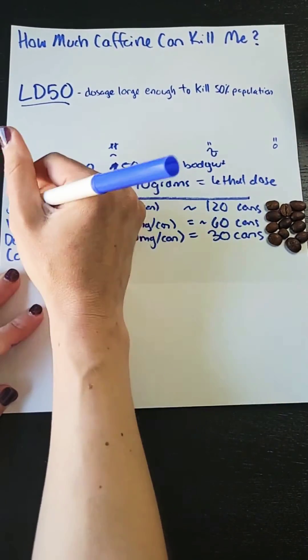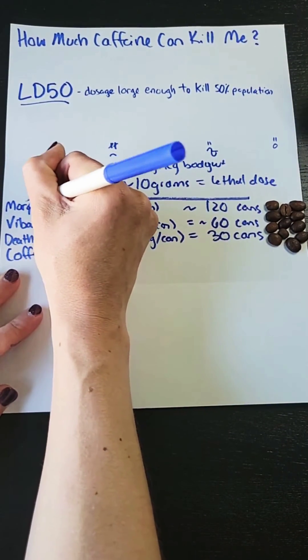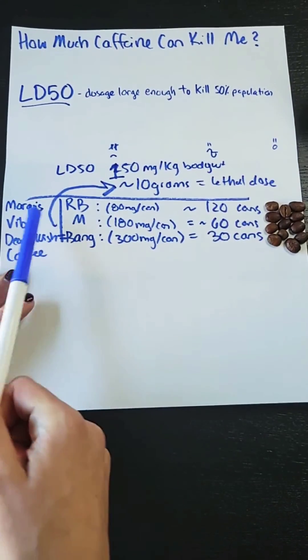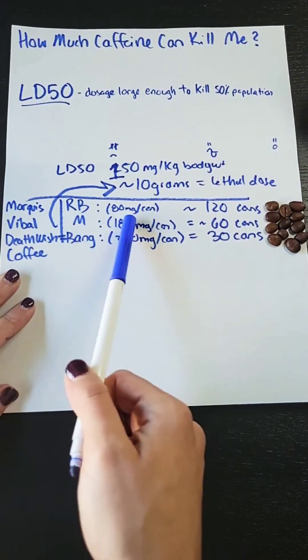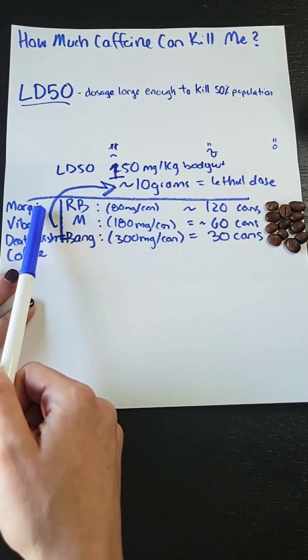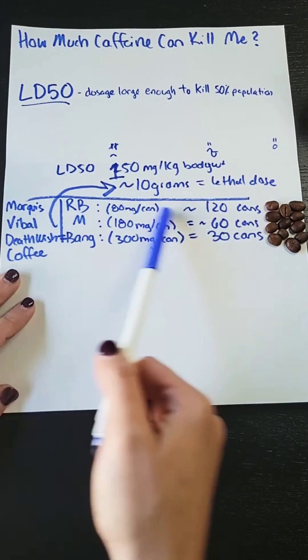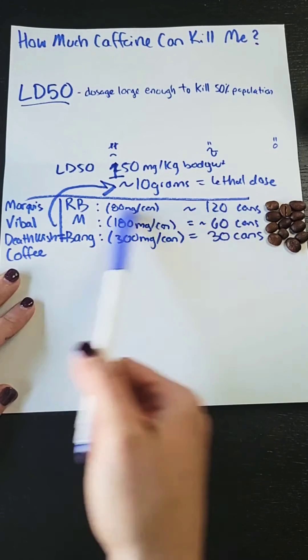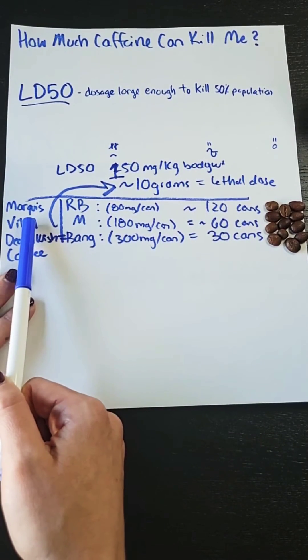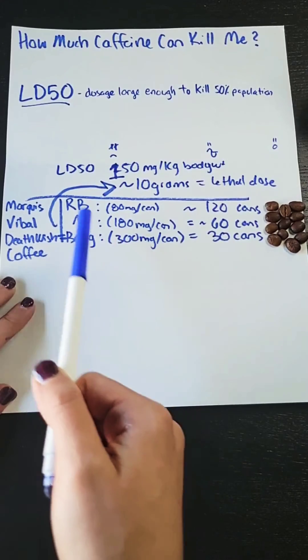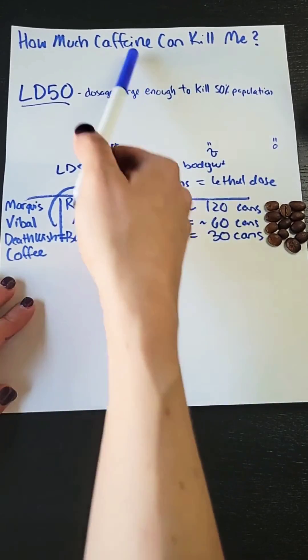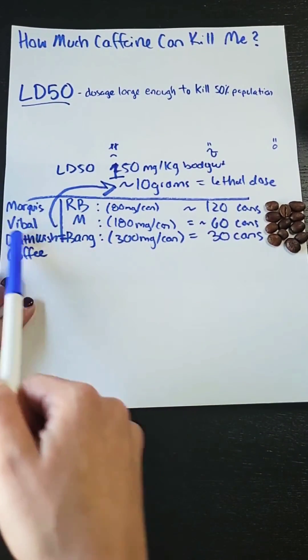And then Red Bull is equivalent to another energy drink I like called Marquee, which has about 100 milligrams of caffeine. So essentially the dosage is small enough you can have 120 cans of this Marquee before you kick the bucket. So it really doesn't matter whether it's coffee or tea or energy drinks, it matters the dosage of caffeine in whatever you're drinking.